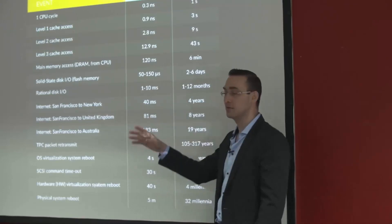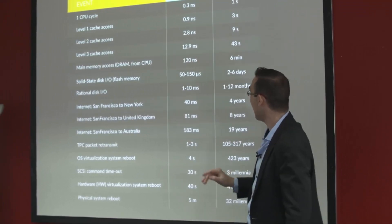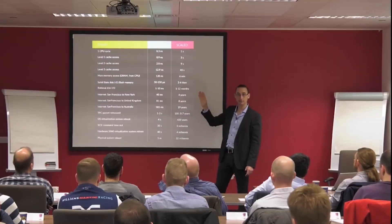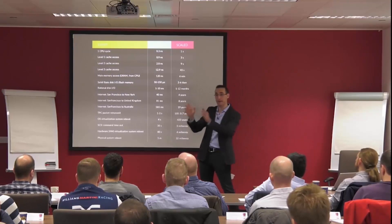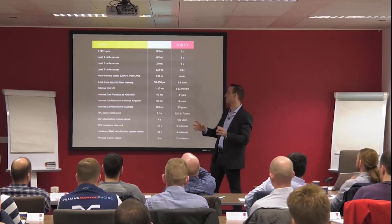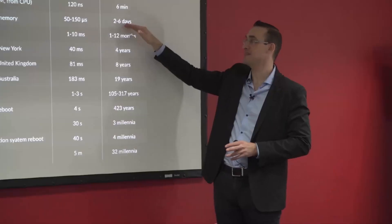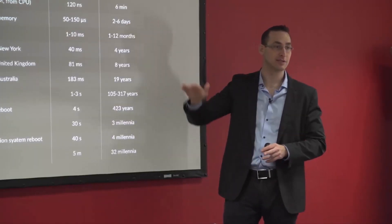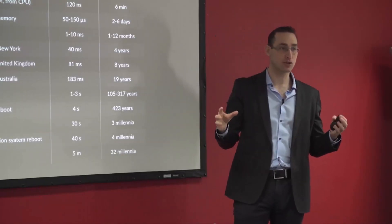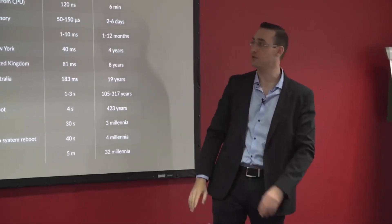With CPUs doing roughly three billion operations per second, if one CPU cycle equals one second, then accessing main memory from the CPU takes six minutes. So you find something in memory — that's six minutes. If you need to go from memory to disk, you're jumping from six minutes to potentially six days. Not minutes to hours — minutes to days. It is that much slower just accessing a drive on the same machine, when scaled with one second equaling one CPU cycle.